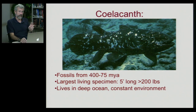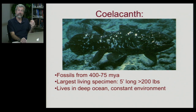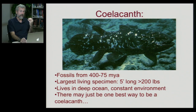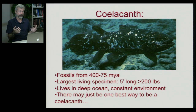The coelacanth is an animal that has not shown much speciation — it is a very conservative animal, essentially unchanged for the last 400-odd million years. They are five feet long, weigh about 200 pounds, and have always been so. They live in a deep ocean, a constant environment, and under these circumstances there has been no pressure for them to change. There may just be one best way to be a coelacanth. Evolution has been the hallmark of life on Earth, giving rise to extraordinary adaptations like eyes and wings, but unless there is a selective pressure to change, it is not inevitable.